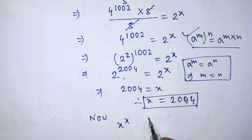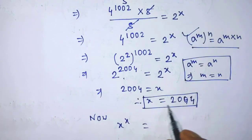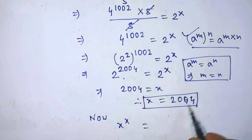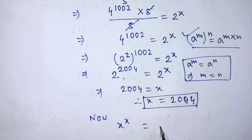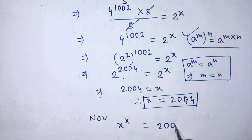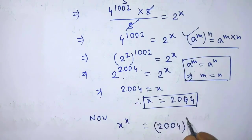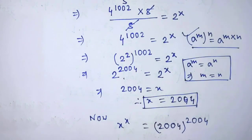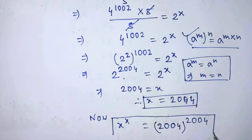Now we put the value of x equal to 2004 into the exponential form. Then we get 2004 to the power 2004. This is our final answer, and our solution is complete.